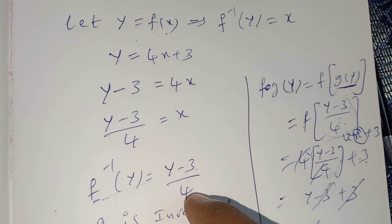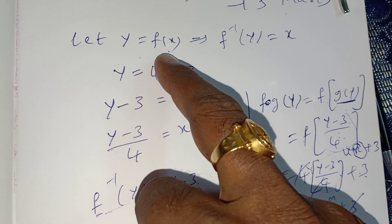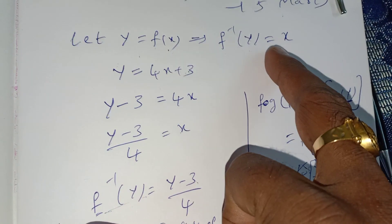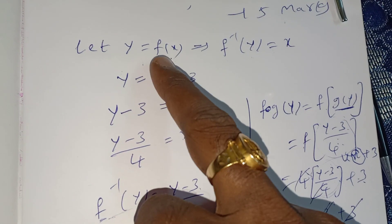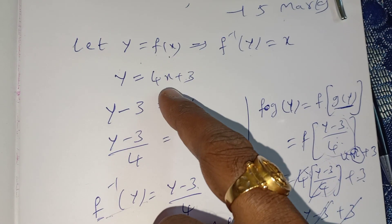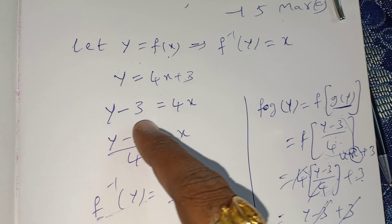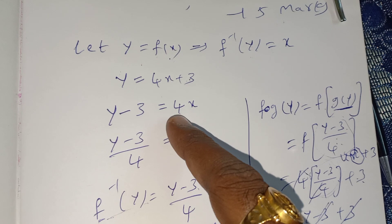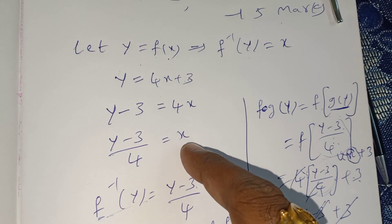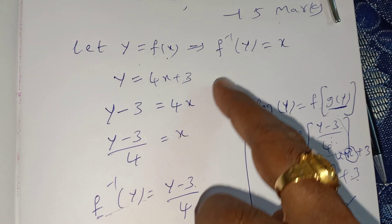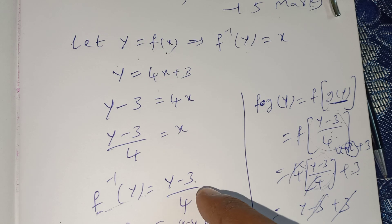Let me repeat once again. Let y = f(x), so f⁻¹(y) = x. We know f(x) = 4x + 3. Transfer 3 to the left-hand side: y - 3 = 4x. Transfer 4 to the left-hand side: (y - 3)/4 = x. Therefore f⁻¹(y) = (y - 3)/4.